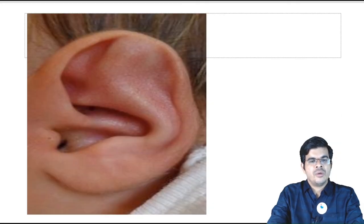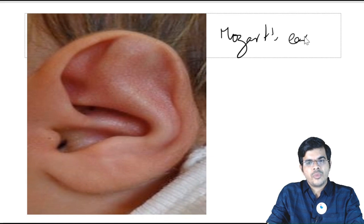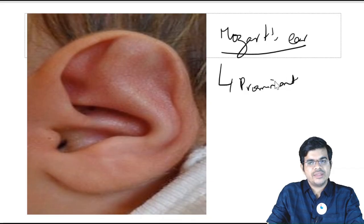It is named after the great Mozart of Madras. He is A.R. Rahman, Mozart of Madras, and the other one is the real Mozart. And it is known as Mozart ear — this condition is known as Mozart ear. Mozart ear is nothing but prominent antihelix.